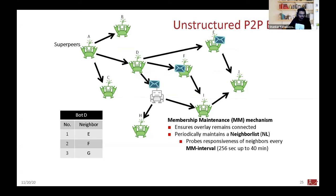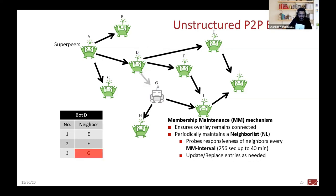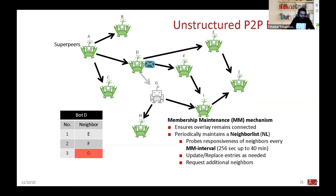Let's say G is offline and doesn't respond, while only E and F respond. Node D now knows G is unresponsive. To avoid isolation, the membership maintenance mechanism allows entries to be replaced. D will ask an existing responsive neighbor — say F — for additional neighbors. F says, why not consider I? D then replaces G with I in its neighbor list. This process of membership maintenance allows peer-to-peer botnets to self-sustain, self-organize, and self-heal. Bot masters don't have to worry — that's the key advantage of this architecture.